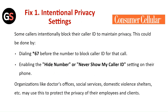Fix 1: Intentional Privacy Settings. Some callers intentionally block their caller ID to maintain privacy. This could be done by dialing star 67 before the number to block the caller ID for that call, or by enabling the 'Hide Number' or 'Never Show My ID' settings on their phone. Organizations like doctor's offices, social services, domestic violence shelters, etc. may use this to protect the privacy of their employees and clients.